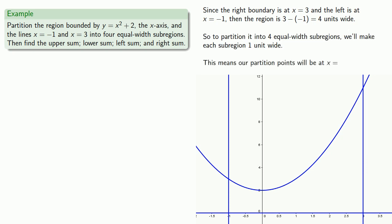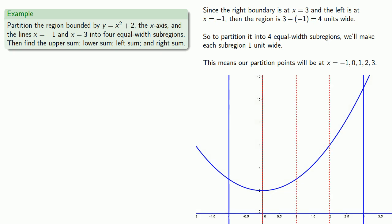This means that our partition points are going to be located at x equals negative 1, that's the start of the region, 0, 1, 2, and 3. So let's go ahead and draw some vertical lines through those points. Now it'll also be useful to know where these vertical lines intersect the top and bottom curves, so we'll locate those points.